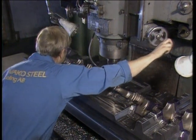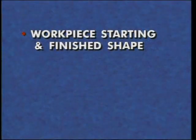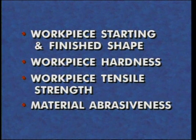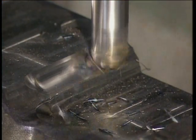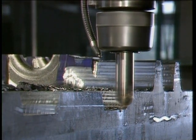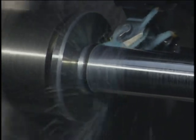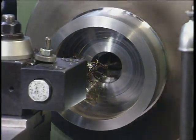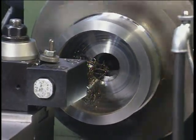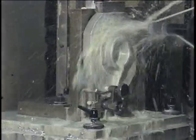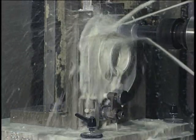To effectively select tools for machining a part, a machinist must have specific information about the workpiece such as the starting and finished shape, the hardness, the tensile strength, and abrasiveness of the material. These factors all influence the interaction between the tool and the work. The machinist also needs to know whether the workpiece material breaks into short chips easily or whether it tends to flow into long, hard-to-break stringy chips. Also important is the part's work holding setup, which properly orientates and holds the workpiece, and the power and speed capacity of the machine tool.